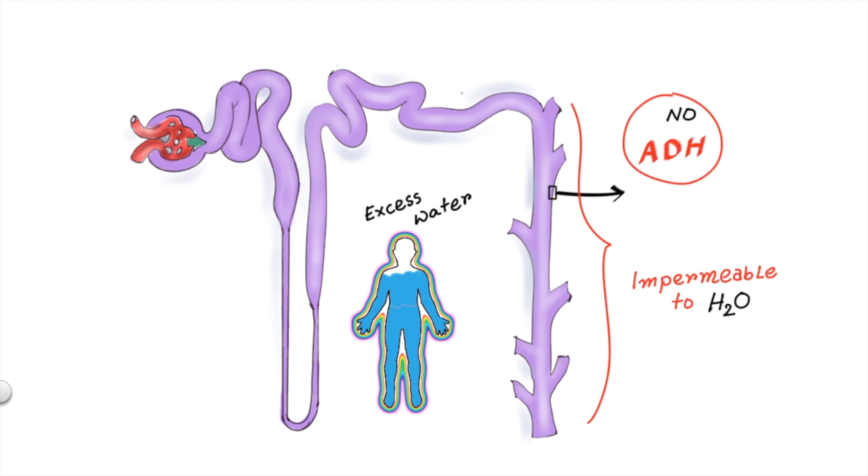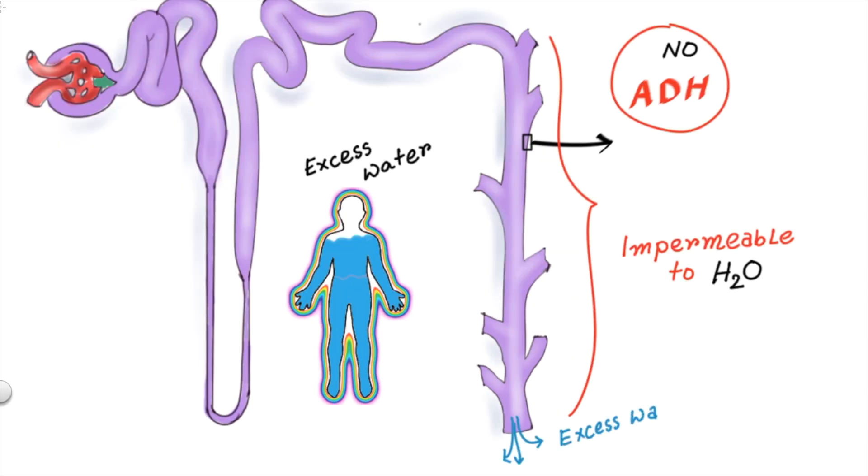If ADH is not there, it will remain water impermeable. It means no water can reabsorb back to the general circulation so it will pass out as urine.